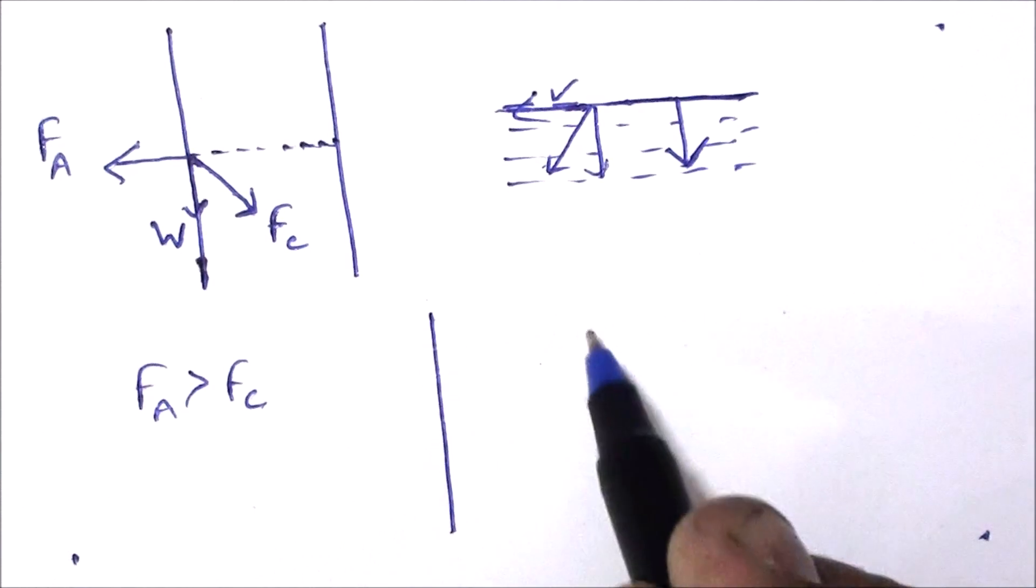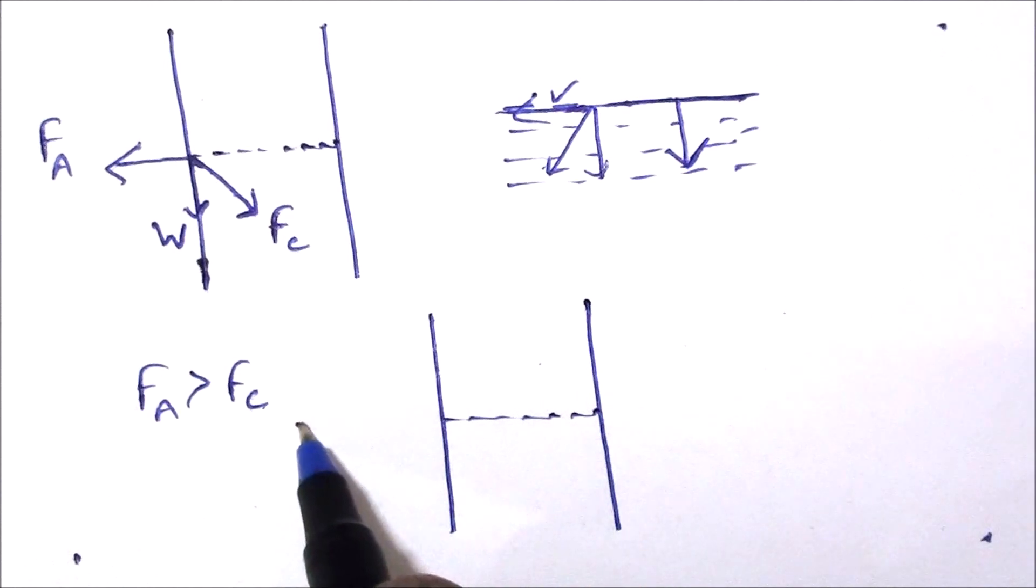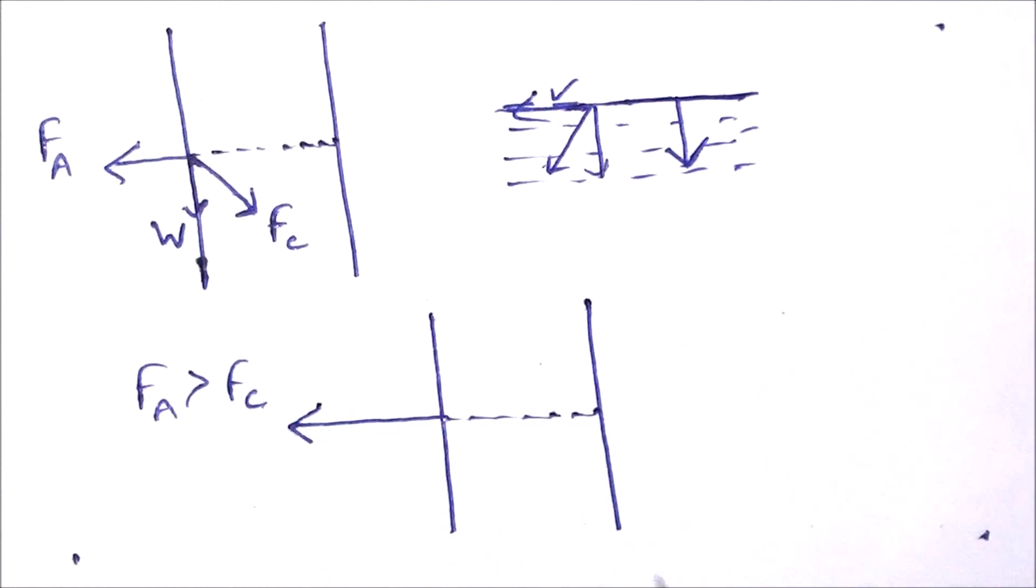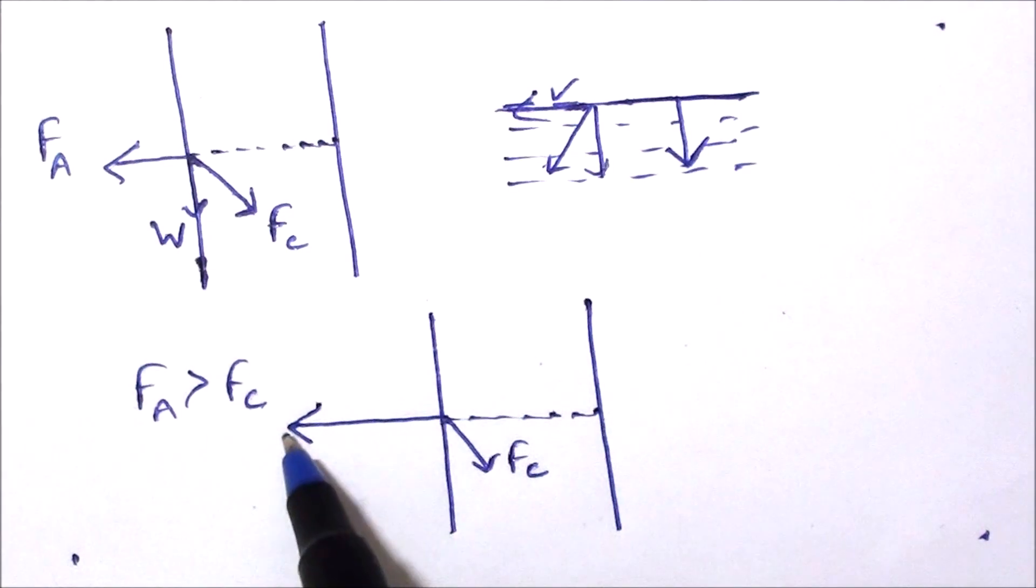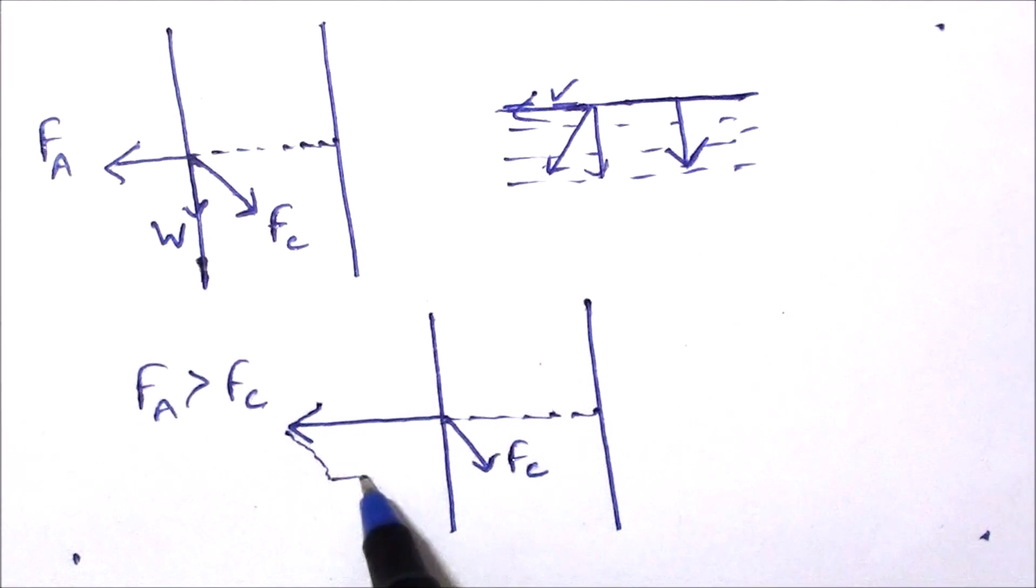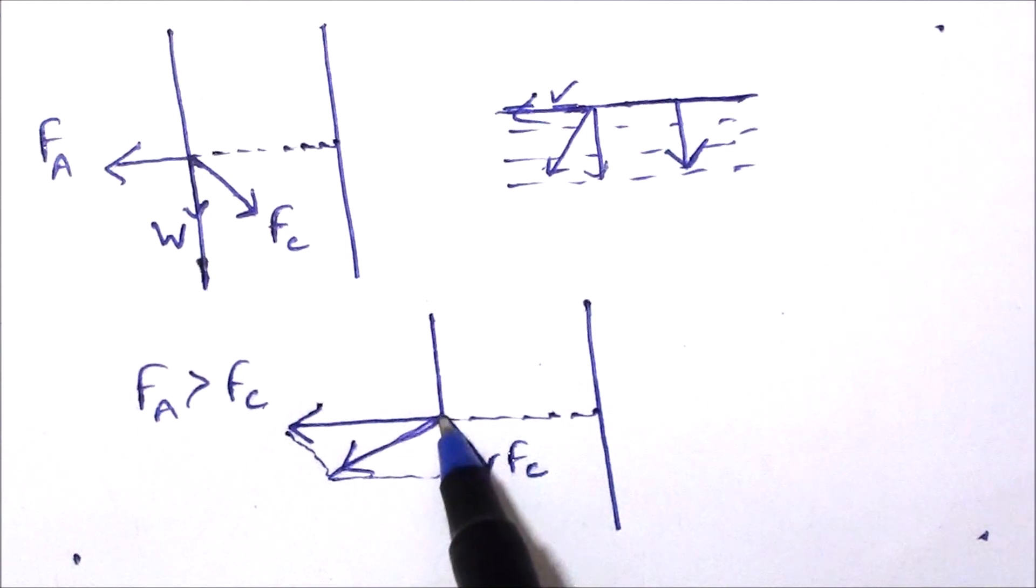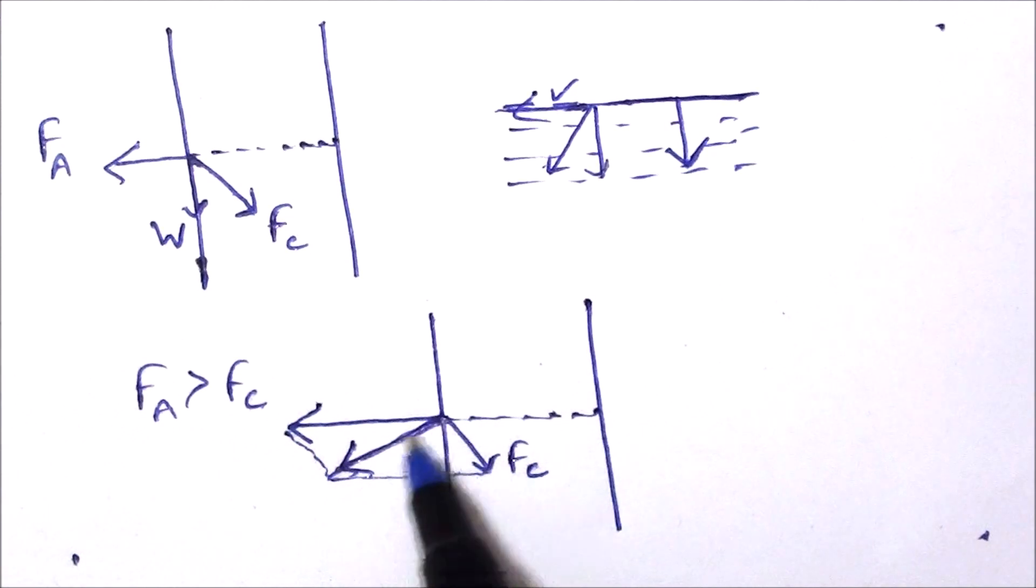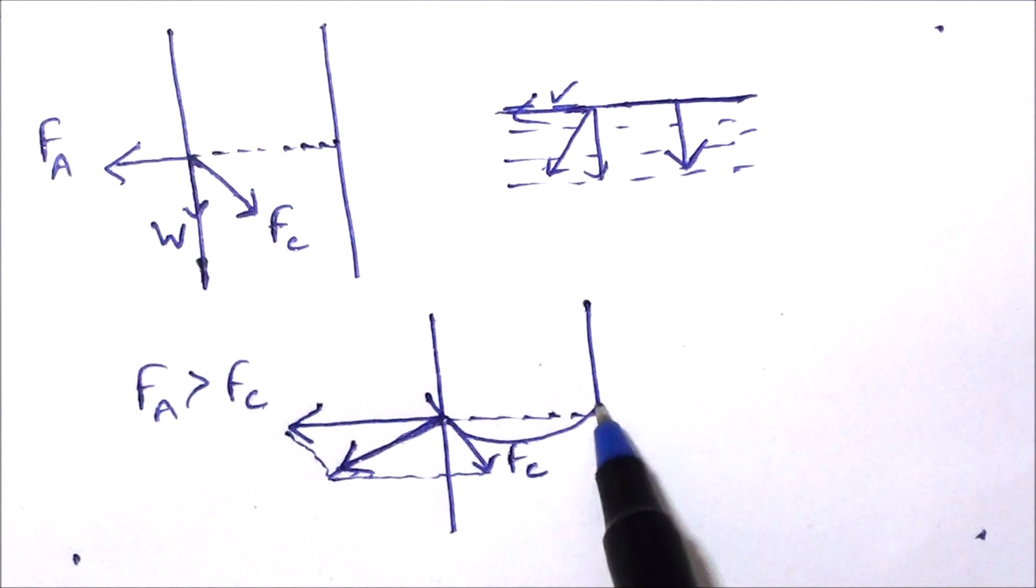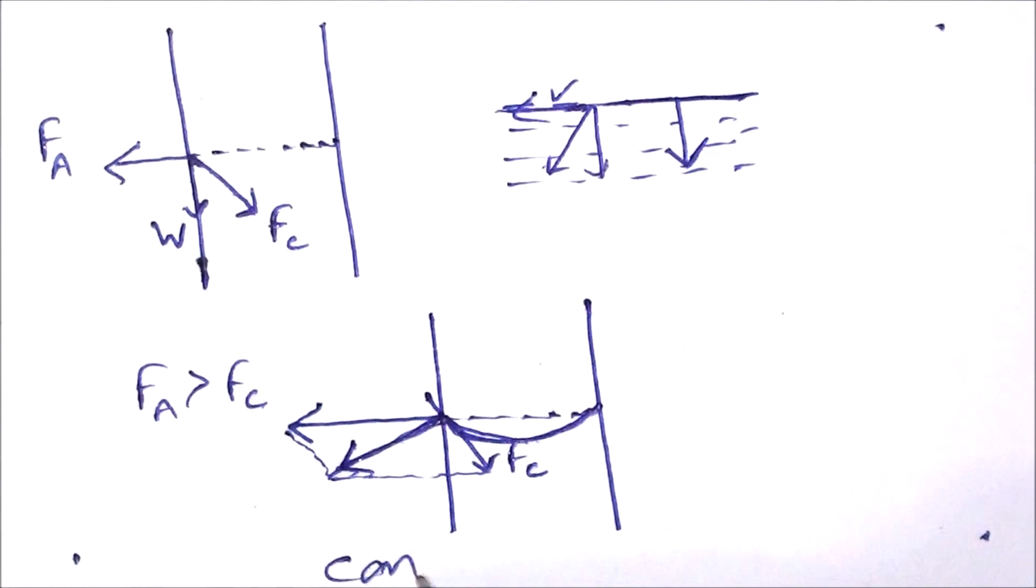This means the forces due to glass on liquid molecules are stronger. We can find the resultant using the parallelogram law of vector addition and this is the resultant. I am ignoring the weight. So it means now that the liquid surface here will be perpendicular to this shape. So it will take this shape. The liquid meniscus will be concave.